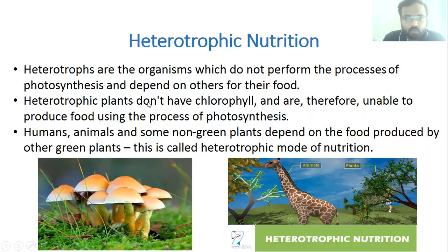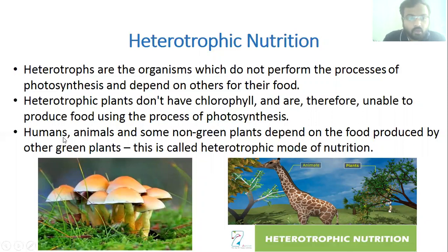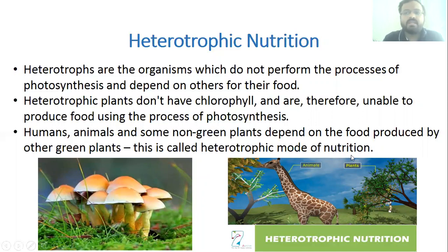Heterotrophic plants don't have chlorophyll — non-green plants like fungi do not have chlorophyll and are therefore unable to produce food using photosynthesis. Since photosynthesis takes place inside the chlorophyll of leaves, organisms without chlorophyll cannot perform it. Humans, animals, and some non-green plants like fungi depend on the food produced by other green plants — this is called heterotrophic mode of nutrition.